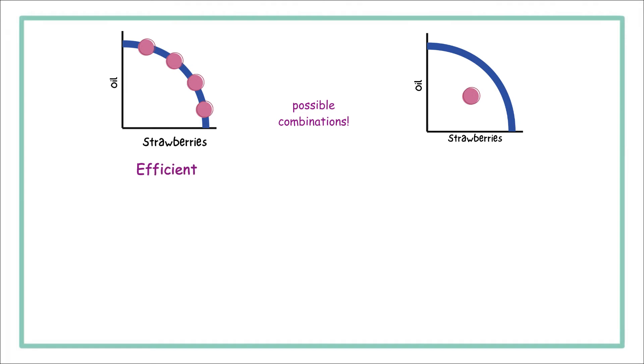whereas the combinations below the curve are inefficient because resources are being underutilized. In this case, the curve isn't linear. It's bowed out. Why?